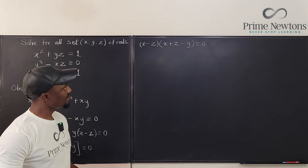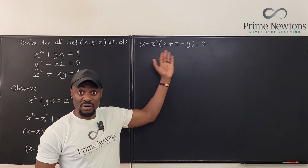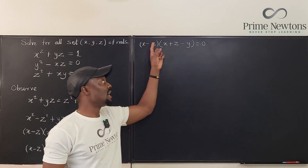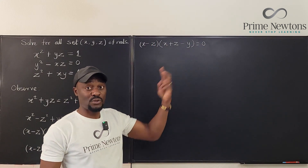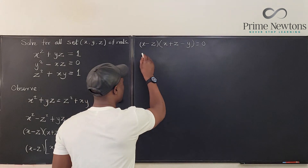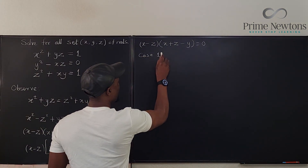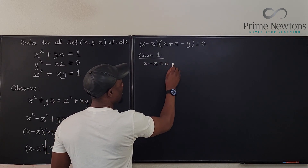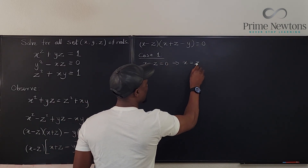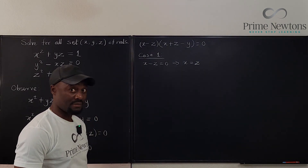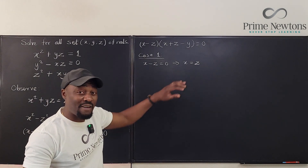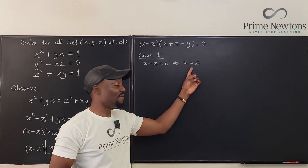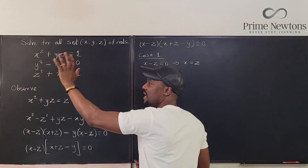By the zero product property, when two things multiply to give 0, either one factor is 0 or the other is 0. So we have two cases. Case one: x minus z equals 0, which implies x equals z. We need to go back to the original equations and check what this gives us.